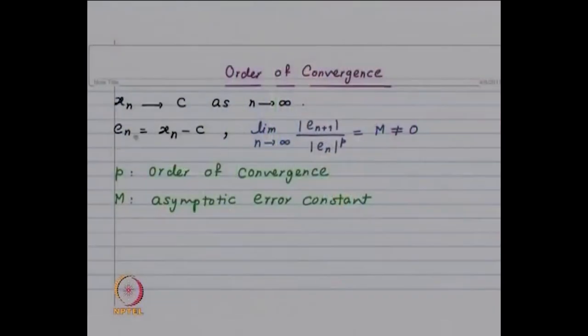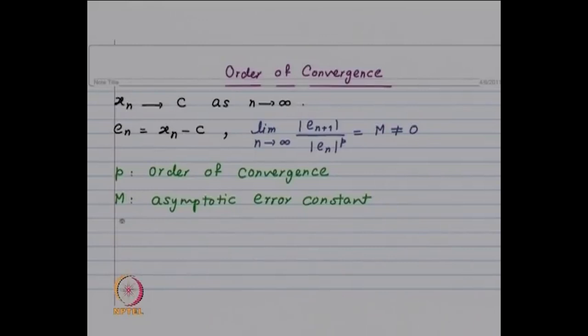First let us show linear convergence in the fixed point method. For Newton's method and fixed point iteration, to show the order of convergence we are going to use the mean value theorem or extended mean value theorem, and for the secant method we will use the error in polynomial approximation. The sequence x_n converges to c, E_n denotes the error x_n minus c, and if the limit of |E_{n+1}| / |E_n|^p equals m ≠ 0, then p is the order of convergence and m is the asymptotic error constant.